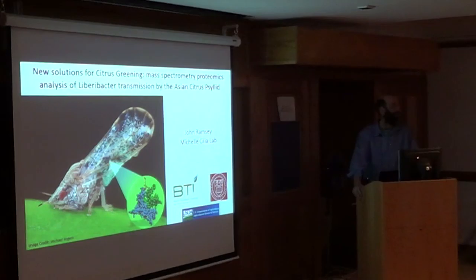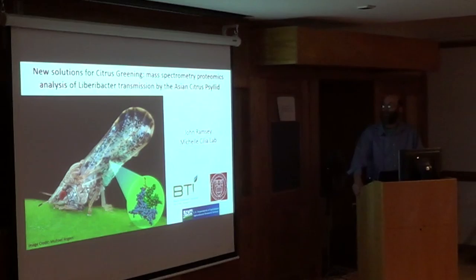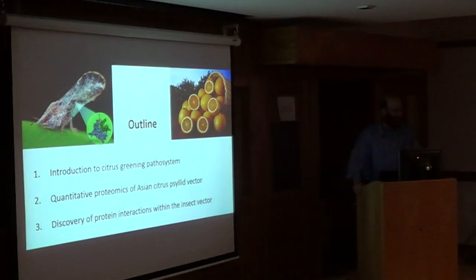We're using mass spectrometry to study citrus greening disease, and there's a number of projects underway on citrus greening in the Celia lab right now, but this figure here represents the central objective of the project I'm going to talk about today. We're trying to peer inside the psyllid and understand the proteins and protein interactions that are essential for transmission of the citrus greening pathogen — the Liberobacter — by the Asian citrus psyllid, the insect vector of the pathogen. I was told to keep these terms straight for a plant pathology audience.